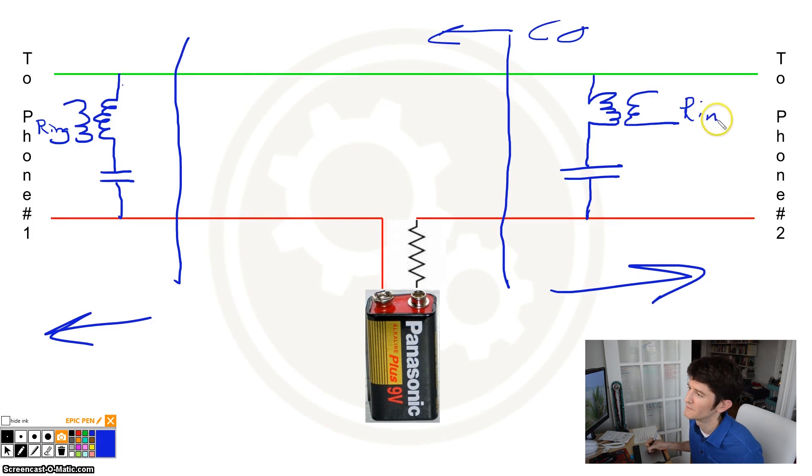What happens when you have the hookup like we've done with the battery is power comes from the battery, comes up, and then it's blocked by this capacitor, so it can't go anywhere. Even if you take this phone off-hook and close the circuit so power flows to this phone, nothing's going to happen.